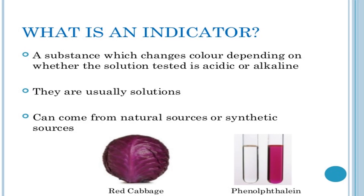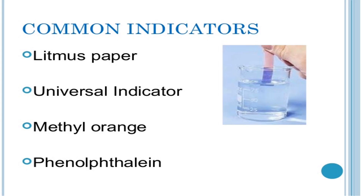Indicators can come from natural or synthetic sources — for example, phenolphthalein, methyl orange, and Congo red. Each indicator has a definite pH range over which it is completely dissociated or undissociated. Increasing or decreasing the pH beyond the range will have no further effect. For example, Congo red has a pH range of 3 to 5: it is yellow at pH 3 or less, and red when the pH is 5 or more.